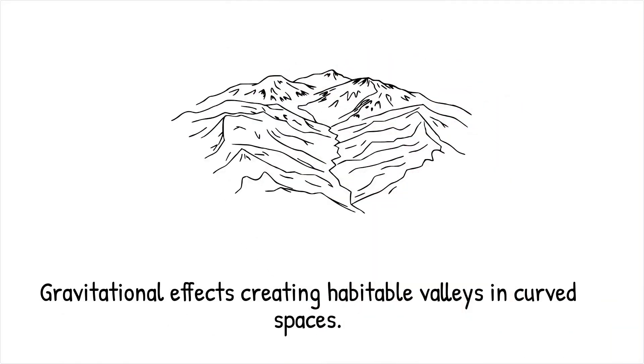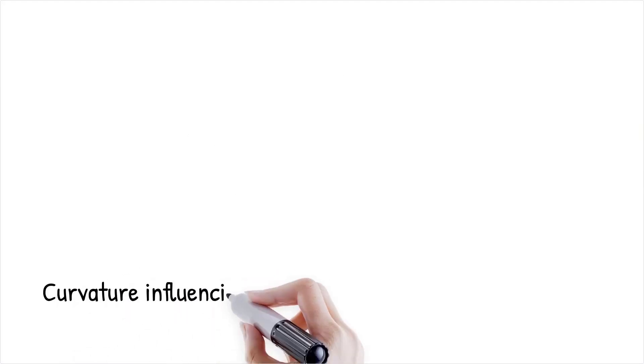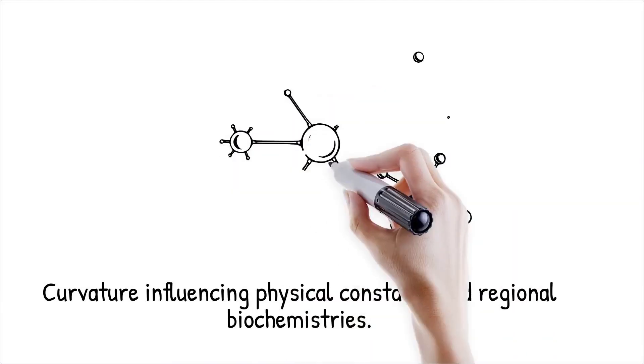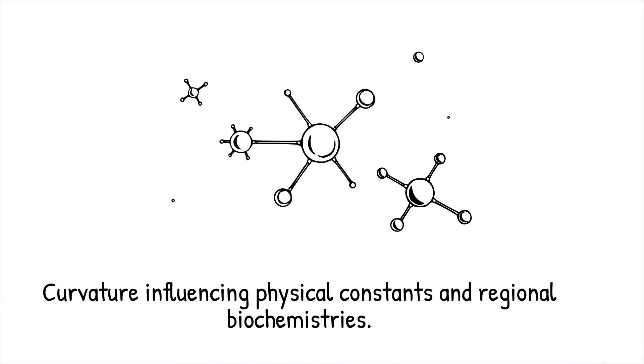Gravitational effects might create regions of varying curvature, forming habitable valleys where life could emerge and thrive. The curvature could also affect fundamental physical constants, influencing chemical reaction rates, molecular bonding, and even the stability of atoms in different regions of curved space. This could lead to regional biochemistries tailored to specific topological constraints.